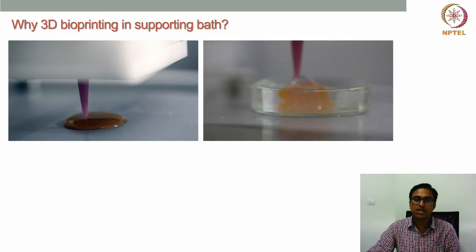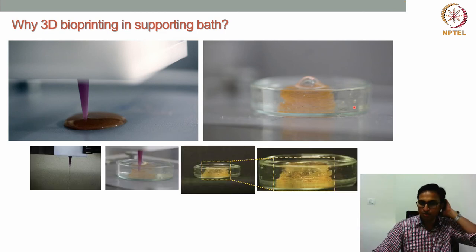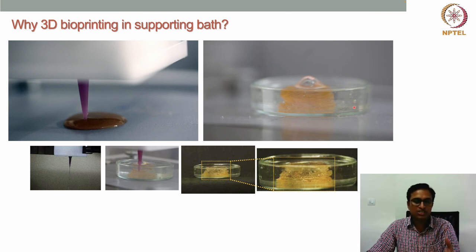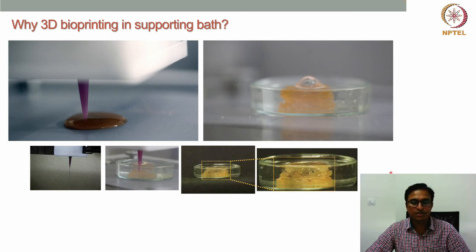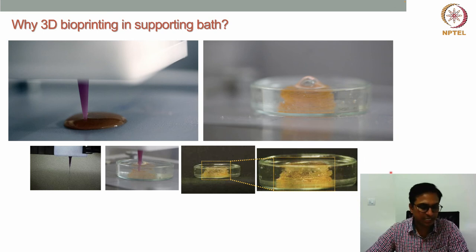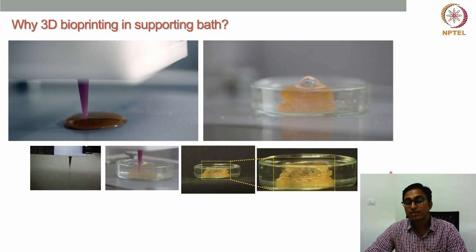With the support bath, a very good structure can be printed using the same soft bioink. Any kind of complex geometry can be created within the support bath, and the bath material provides support so a high-quality geometry is maintained. With this technique, tubular structures can be printed with soft hydrogels — which would otherwise be impossible. This demonstrates why 3D bioprinting in a support bath is so powerful: complex geometries, 3D anisotropy, and intricate microstructures are all achievable.